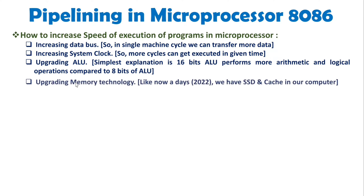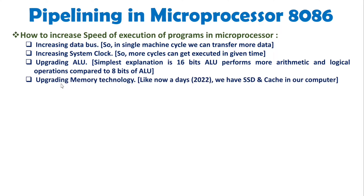Next is by upgrading memory technology interfaced with the microprocessor. Nowadays in 2022, SSDs and cache memory are in use, along with dedicated graphics card memories and other memory types. By upgrading memory technology, we can increase speed.